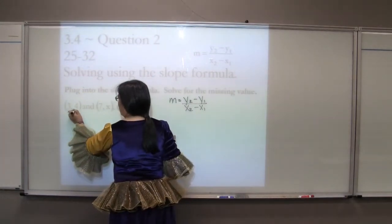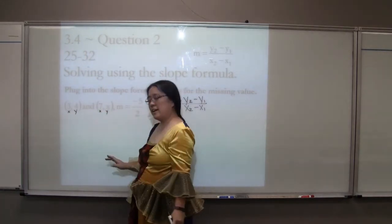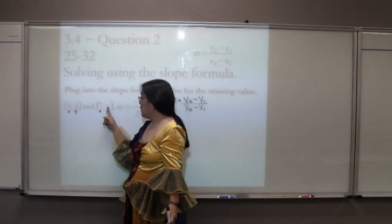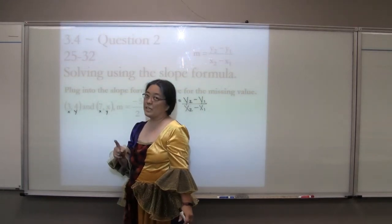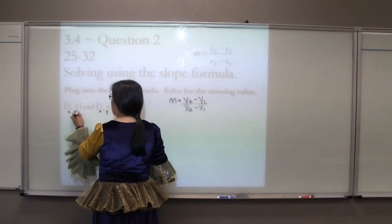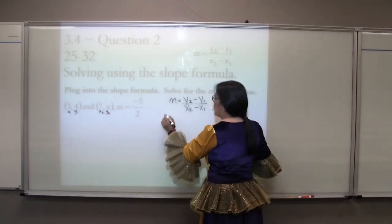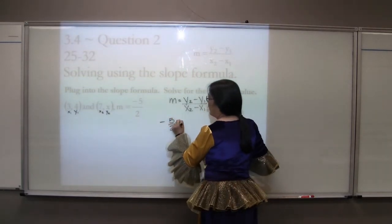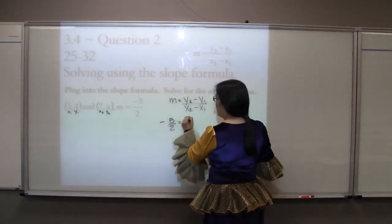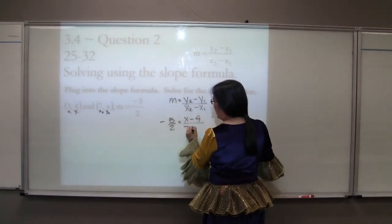We're going to plug in. This is our x and y, this is also our x and y. Notice I have viciously put an x in the y spot. That is tricky. Be very careful on that. This is our first x and y, this is our second x and y. This is our slope. We're going to plug in our slope here.